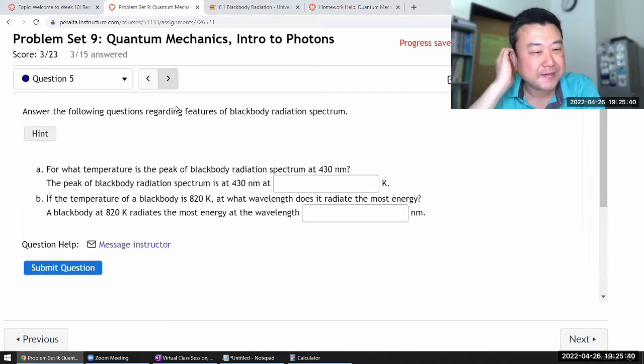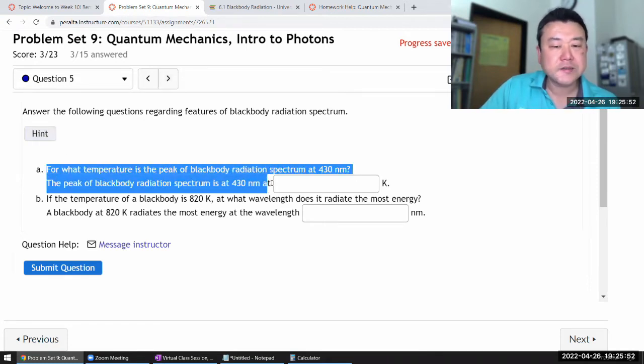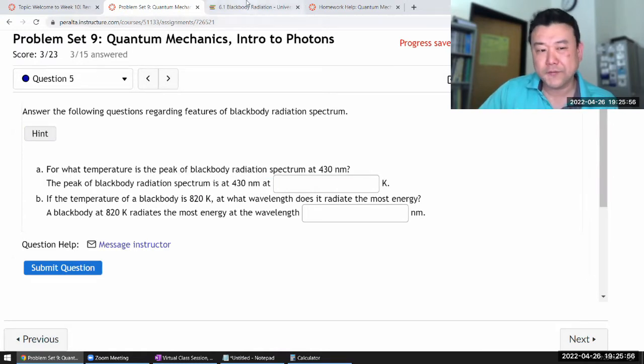Okay, the next question says answer the following questions regarding features of blackbody radiation spectrum at what temperature. This involves some physical constants that I don't quite have memorized, so I'll have to refer to the textbook.